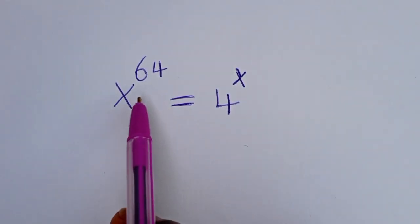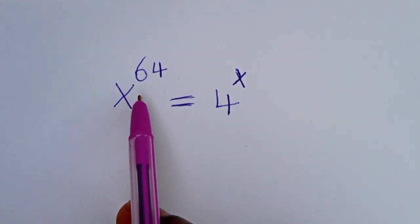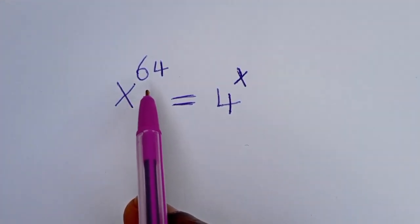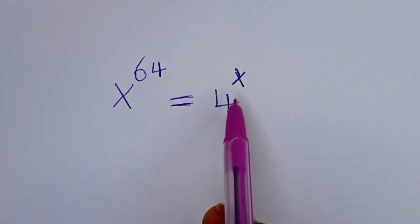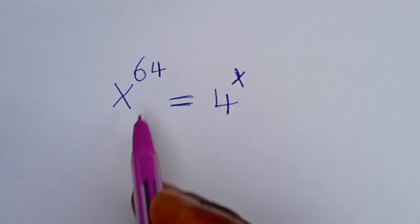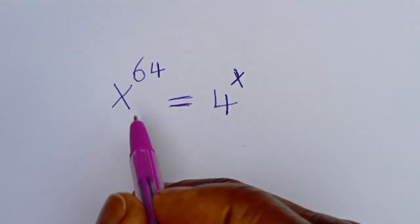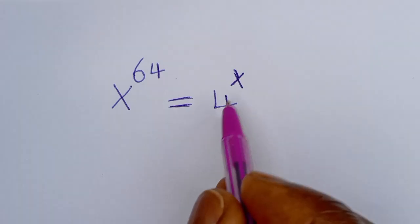Hello! How to solve for s in this equation: s to the power of 64 is equal to 4 to the power of s. Here we have s to the power of 64 which is equal to 4 to the power of s.